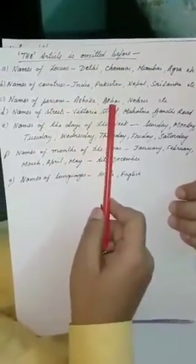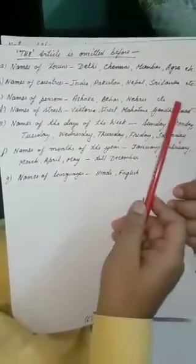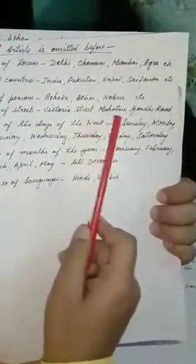Names of countries you cannot put THE. Example is given: India, Pakistan, Nepal, Sri Lanka. Names of persons: Ashoka, Akbar, Nehru. Names of streets: Victoria Street, Mahatma Gandhi Road.